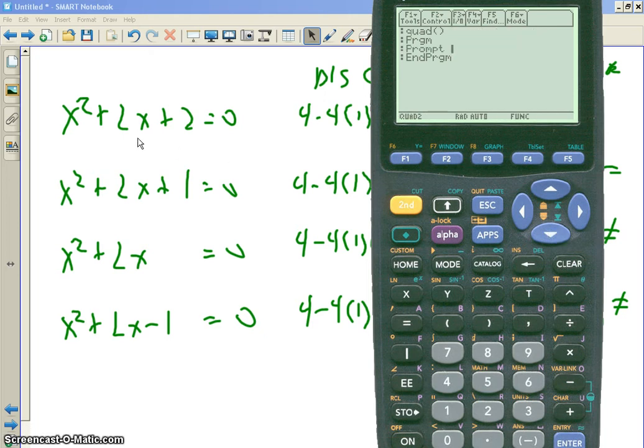Ask the user for input. What input do I need? I need the values of A, B, and C. So alpha A, alpha B, alpha C. Enter.